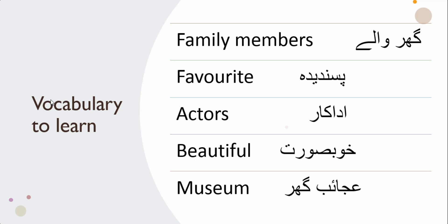Third word: actors — adakar. For example: Pakistani drama ke adakar bohut achi adakari karte hain. Say after me: adakar. Fourth word: beautiful — khubsurat. For example: yeh park bohut khubsurat hai. Say after me: khubsurat. And the last word for today's lesson is museum — ajayib ghar. For example: is ajayib ghar mein bohut si ajeeb o gharib aur bohut munfarid cheezein hain.